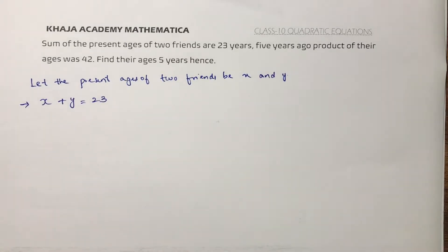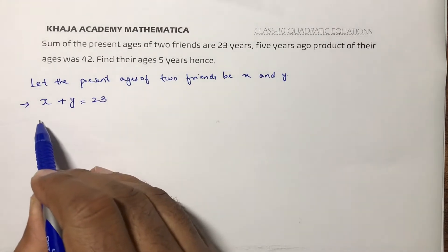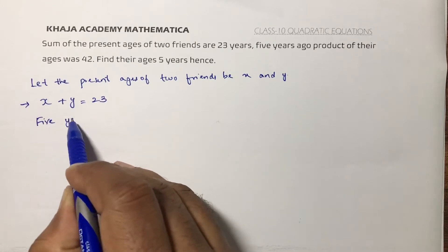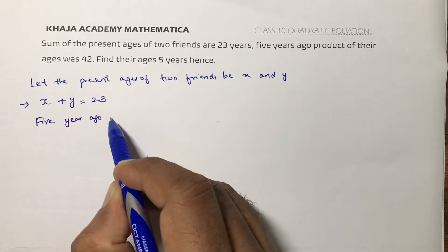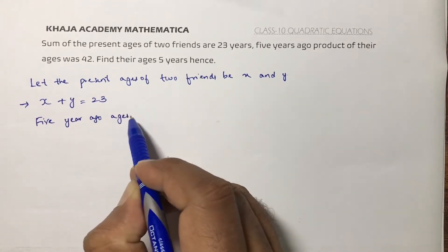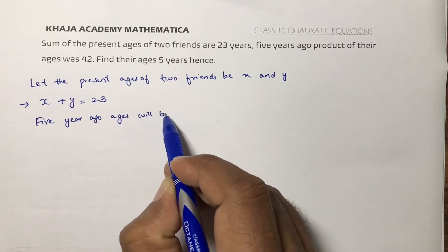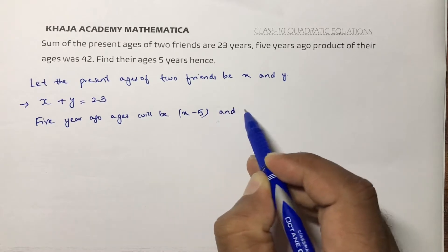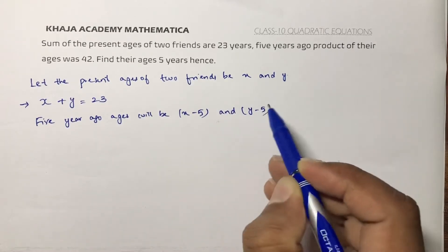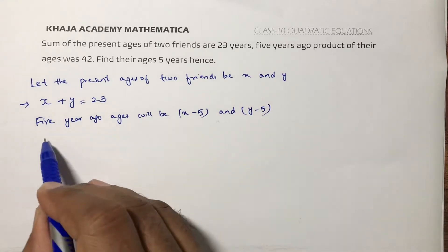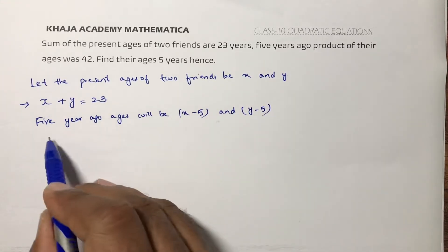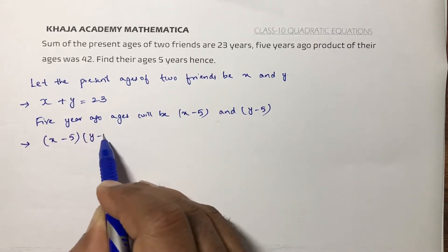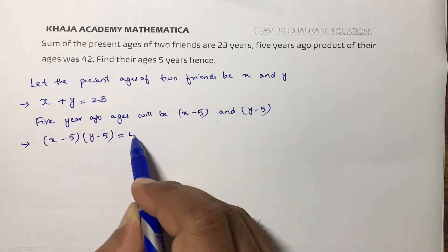Five years ago, the ages will be x minus 5 and y minus 5. Since the product of their ages 5 years ago was 42, we get: x minus 5 multiplied by y minus 5 equals 42.